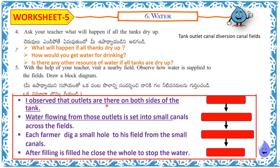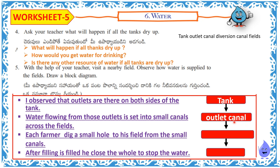I observe that outlets are on both sides of the tank. Water flowing from those outlets is let into small canals across the fields. Each farmer digs a small hole to his field from the small canals. After filling his field, he closes the hole to stop the water. The diagram includes: tank, small canals, outlet canal, observation canal, fields.